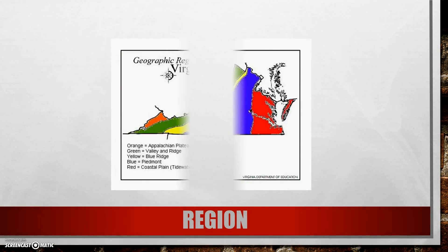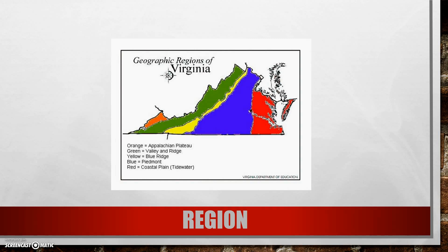For region — the one you talked about last year and sang about — these are divisions amongst larger pieces of land that make it a little easier to study. These are the geographic regions of Virginia: Appalachian Plateau, Valley and Ridge, Blue Ridge, Piedmont, and the Coastal Plain. We divide these into different regions because each is different — different products come from them, the land looks different, some are very close to water, some do not have as many water features.